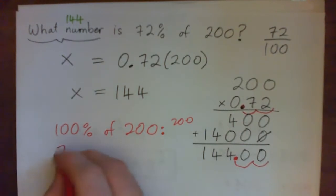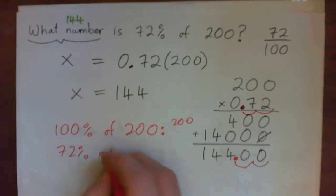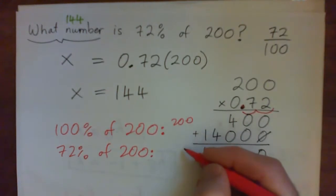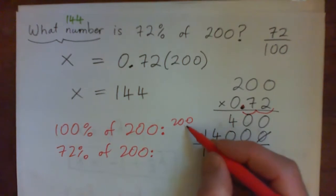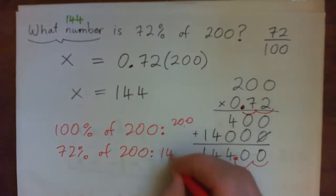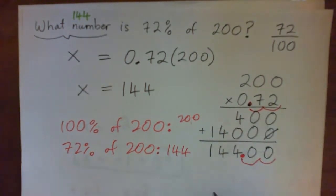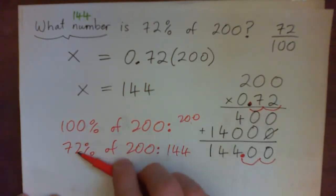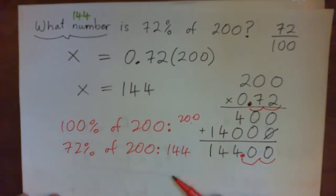So, 72% of 200 should be more or less than 200. It should be less than 200, right? And 144 seems like it's about right. It's a bit less than 200. 72% is a bit less than 100%. So, that seems right, doesn't it? So, that's it. Good. Bye-bye.